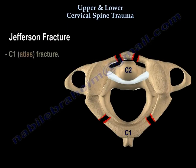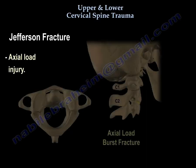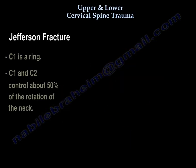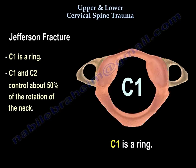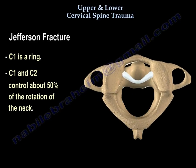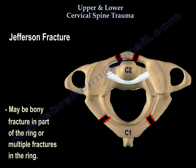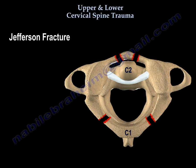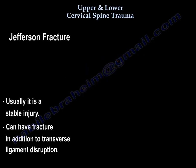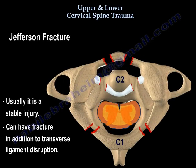Jefferson fracture — C1 or Atlas fracture. It's an axial load. C1 is a ring, and C1 and C2 control 50% of rotation of the neck. You can have a bony fracture — fracture of part of the ring or multiple fractures in the ring. Usually that is a stable injury, but you can also have the fracture in addition to disruption of the transverse ligament.